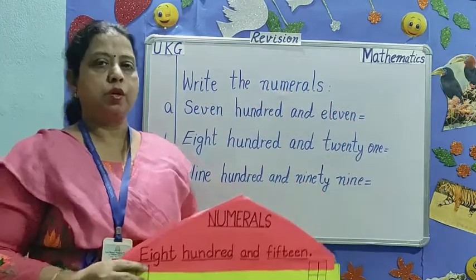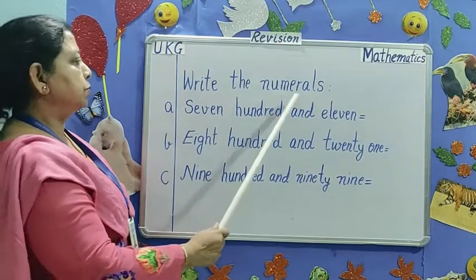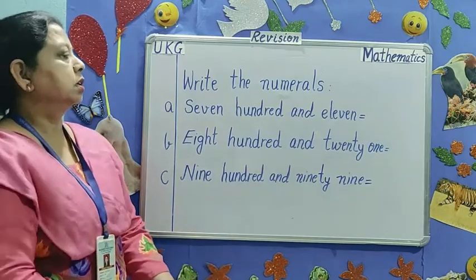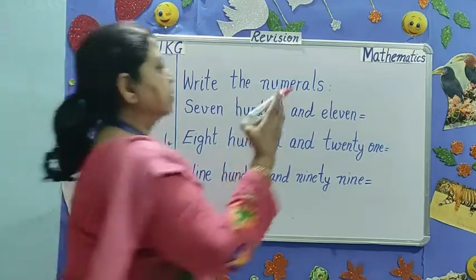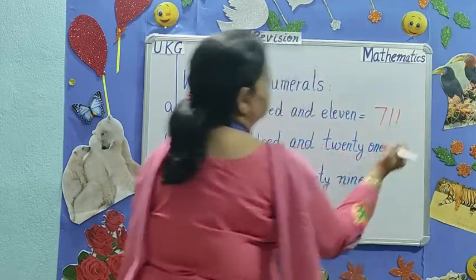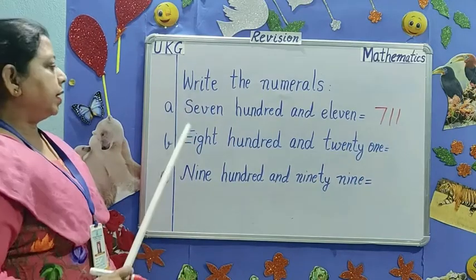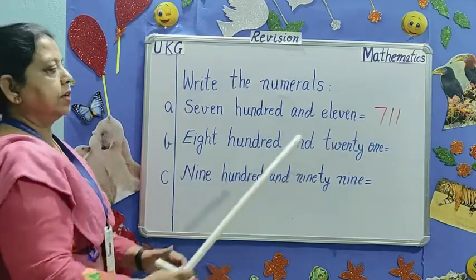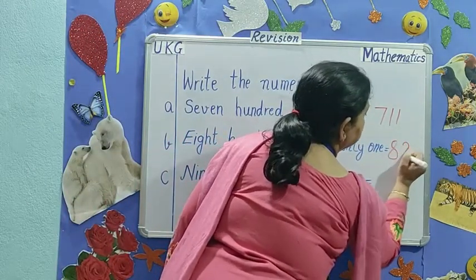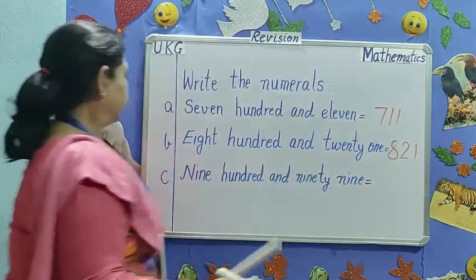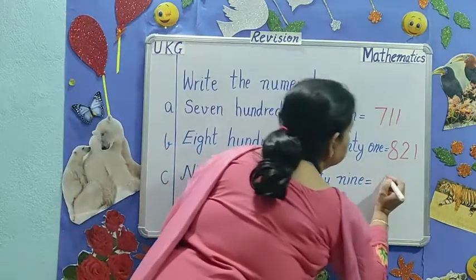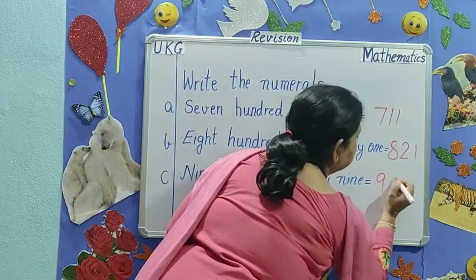Let's do it on the board. Write the numerals. 711. Next number is 821. Next number is 999.